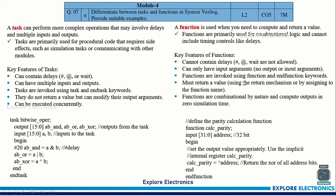Coming to Module 4: differentiate between tasks and functions in SystemVerilog. Five points are given which are sufficient to write the differences. Also give one example of how a task is defined and its functionality — a bitwise AND and XOR operation task is given. Similarly, for functions, a parity calculation example is given. These examples need to be explained to get full marks.